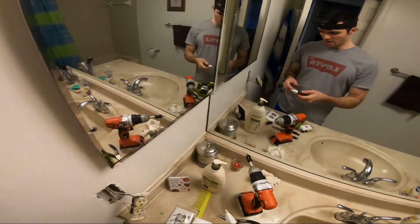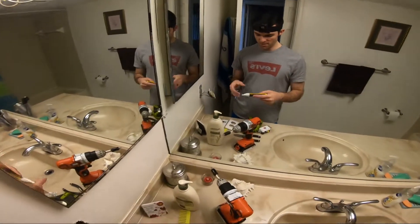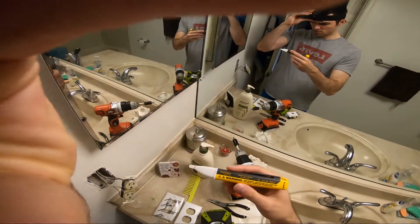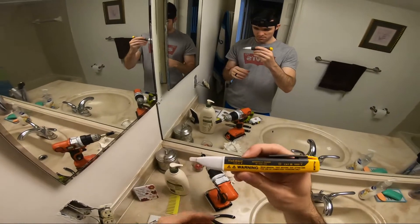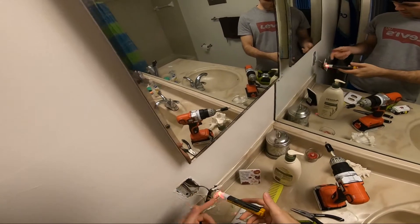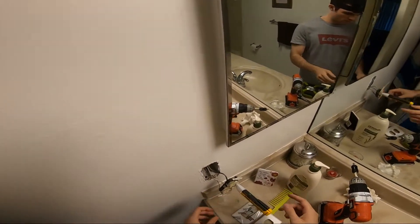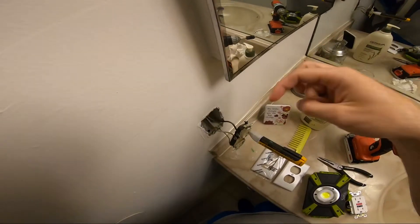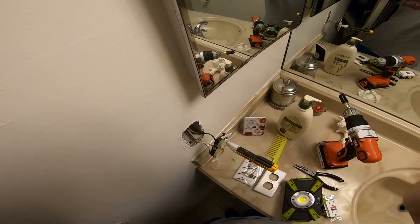Next thing you want to do is make sure there's no power running to it. You can do that two ways. Either A, you can use one of these volt meters. Basically what this is going to do is, right now I already have it turned off at the fuse box, but I'll go ahead and show you what happens when the power is still on.